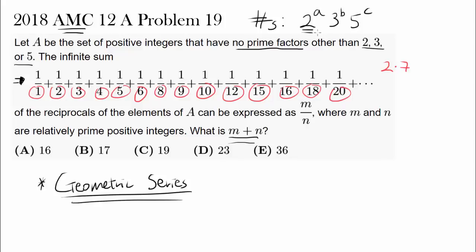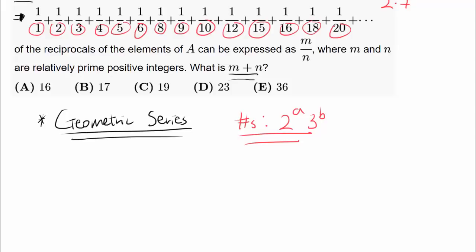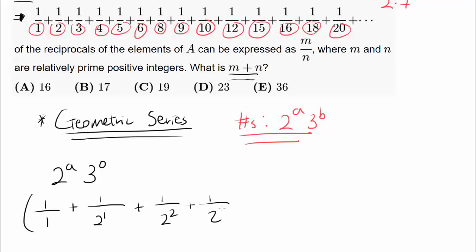Since we are looking at powers of 2, powers of 3, and powers of 5 simultaneously, let's simplify by considering numbers whose prime factors are only 2 and 3, ignoring 5 for now. If we have no factor of 3, we get 1 over 1 plus 1 over 2 plus 1 over 2 squared plus 1 over 2 cubed, and so on.